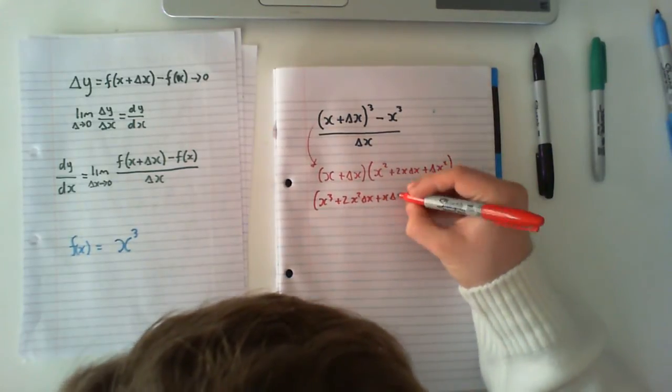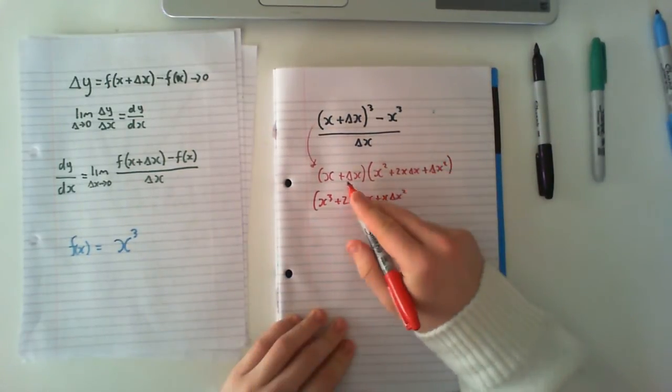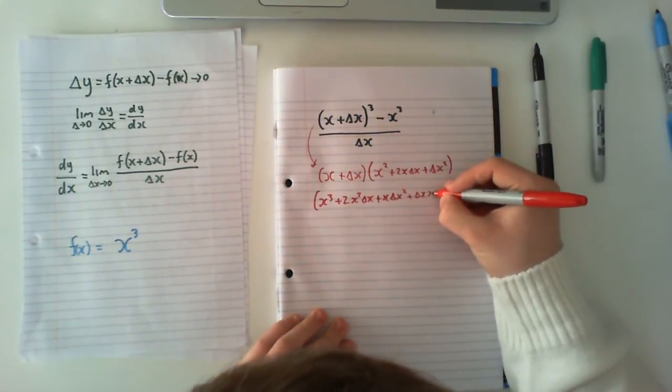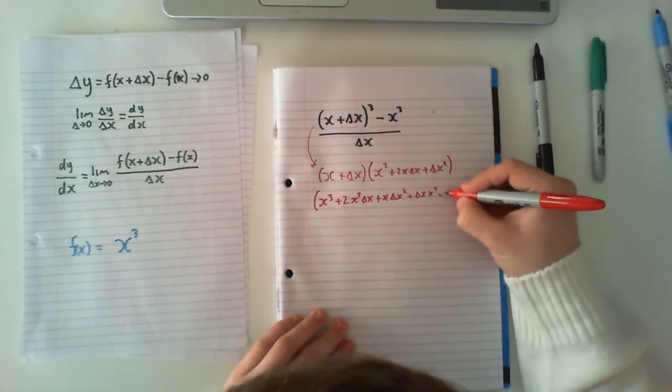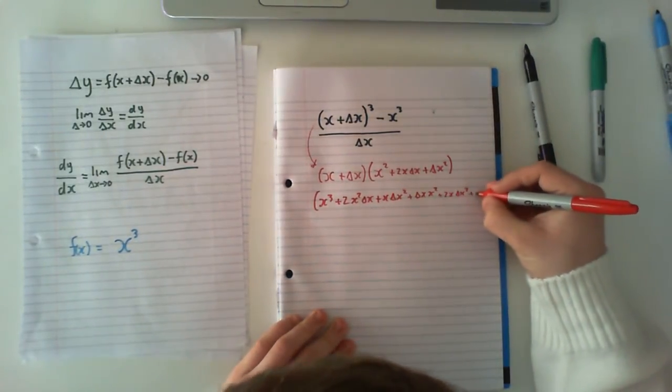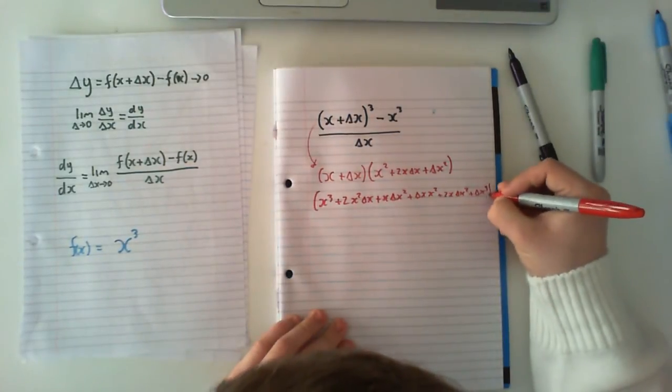Then we can multiply these together and we have x cubed plus 2x squared delta x plus x delta x squared, times (x plus delta x), which gives us x squared delta x plus 2x delta x squared plus delta x cubed.